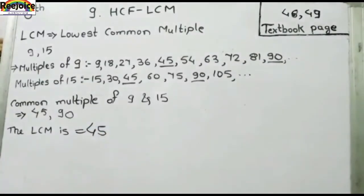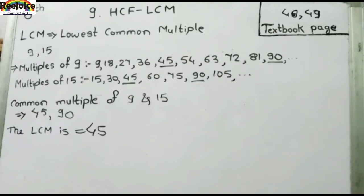LCM की value क्या है — 45। तो इसी तरह से अपन सब examples को solve करेंगे। सिर्फ याद रखना है कि multiples निकालने के लिए जो भी numbers given हैं, तब तक लिखना है जब तक same values न मिल जाएं। The LCM is 45. और इसके जितने भी practice sets हैं वो इस video के नीचे description box में link दिए हैं, वहाँ पर जाके आप देख सकते हैं — सभी questions and answers solved हैं।